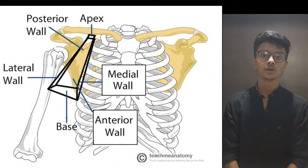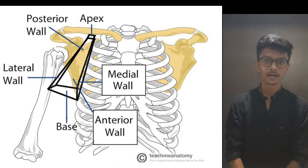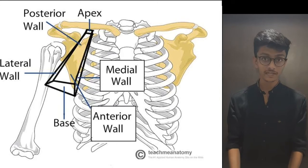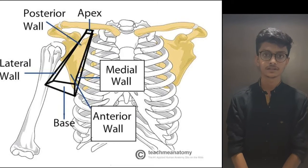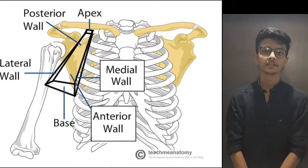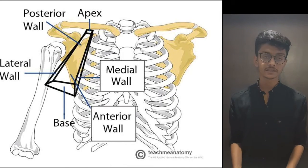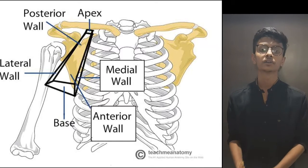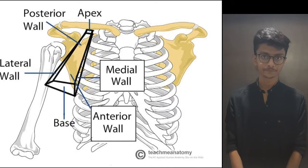The axilla, also known as the armpit, is pyramidal in structure and is present at the upper middle part of the arm.